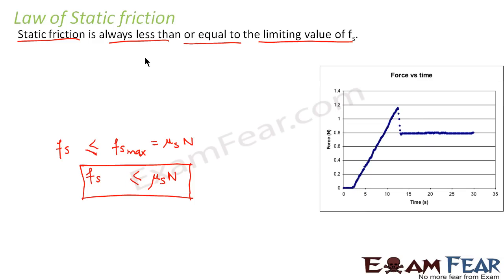Looking again at the same graph: when applied force is zero, friction is zero. As applied force increases, static friction also increases. Static friction reaches its maximum value at this point — Fs max equals μs × N. This value corresponds to this point on the graph. Beyond this point we will discuss the other types of friction as we go ahead.